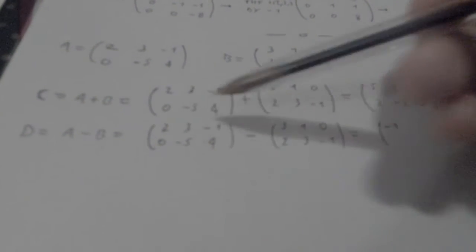So we basically have 2 minus 3 is negative 1, 3 minus 1 is 2, negative 1 minus 0 is negative 1, 0 minus 2 is negative 2.